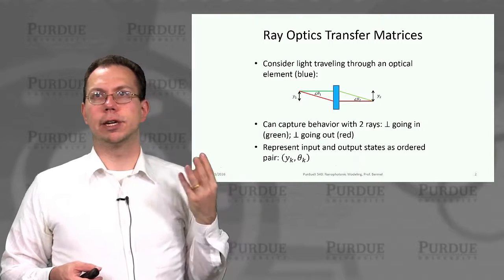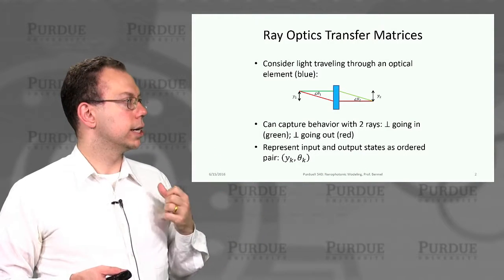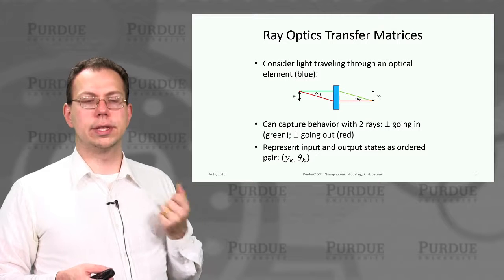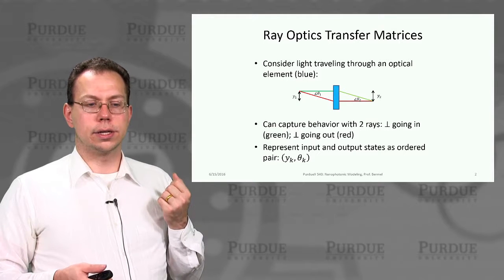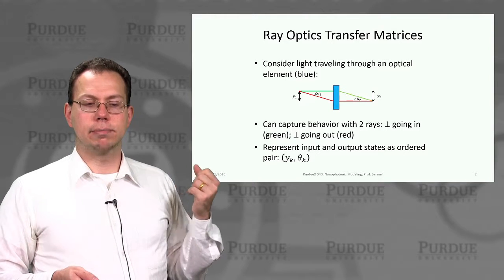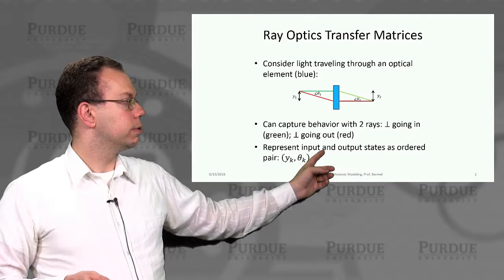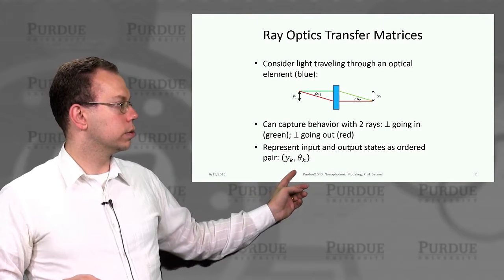As well as the angle theta 2, which is the angle within that new lens. It becomes a pair of input and output states that are ordered as yk, theta k.